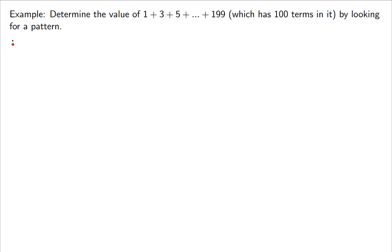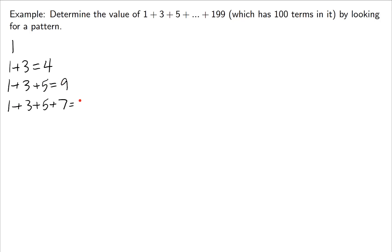The first one is just 1 — if I take just the first number, I get 1. If I take the first 2 numbers, I get 4. If I take the first 3 numbers, I get 9. If I take the first 4 numbers, I get 16. And if I take the first 5 numbers, I get 25.